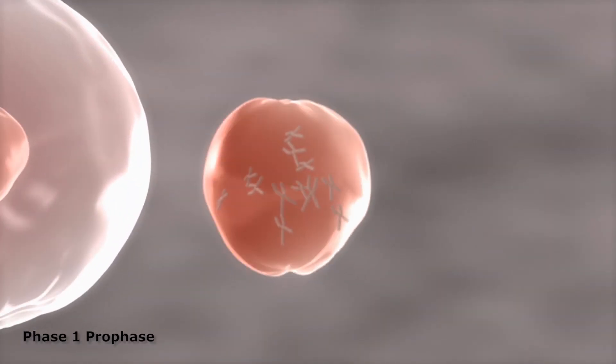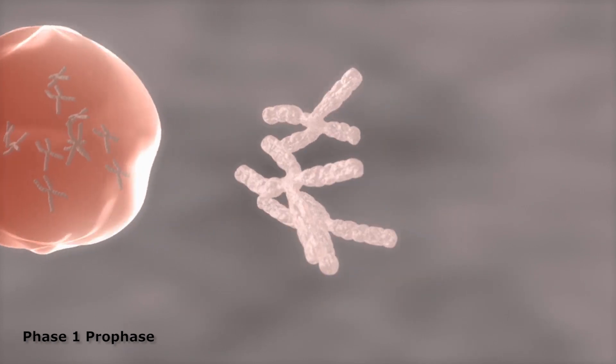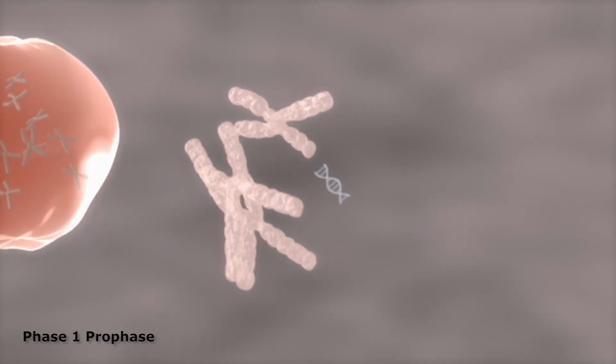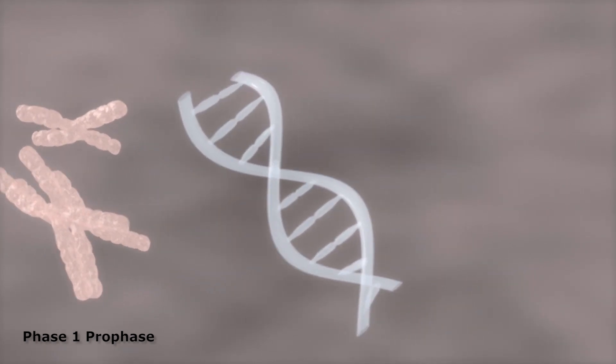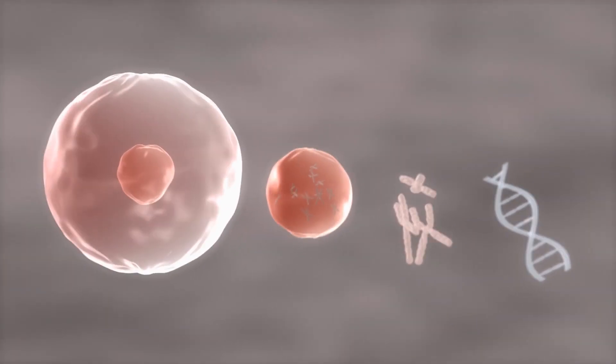Phase 1 is called prophase. During prophase, duplicated chromosomes are visible, and mitotic spindles begin to form.